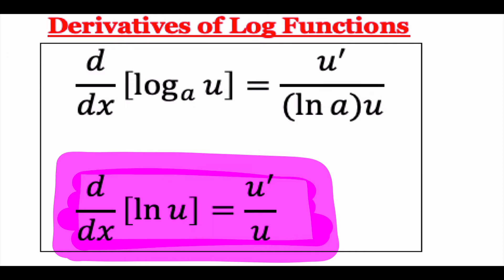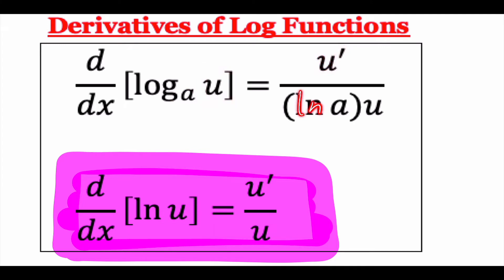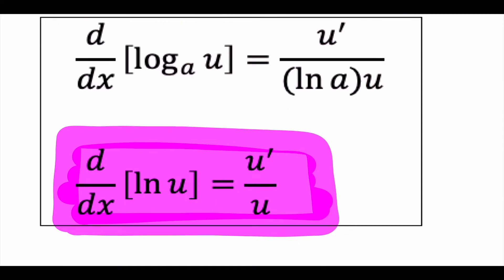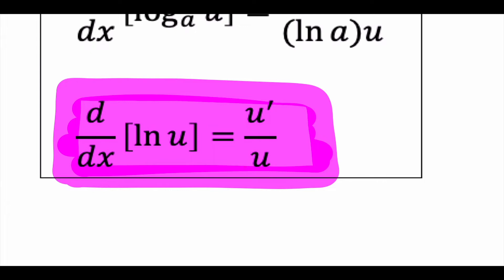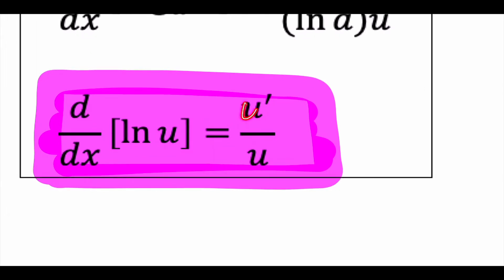AP Calculus likes LNs and E's — you see those all the time. For a regular log with base A: on top is the derivative of whatever is inside, on bottom is the natural log of A times the inside repeated. For natural log: on top is the derivative of whatever is inside, and on bottom it just repeats whatever is inside.